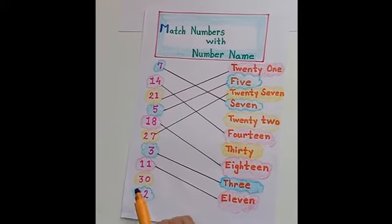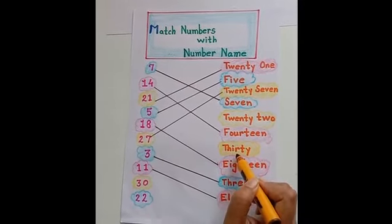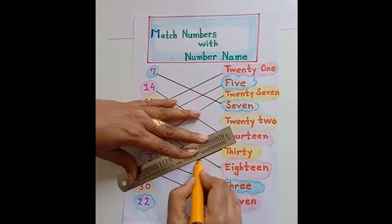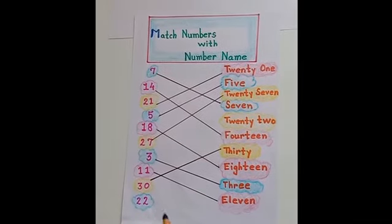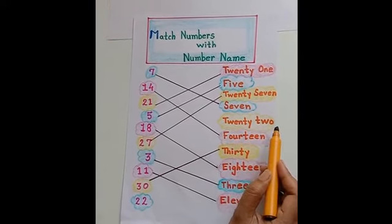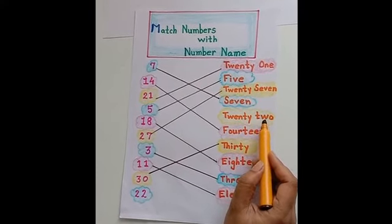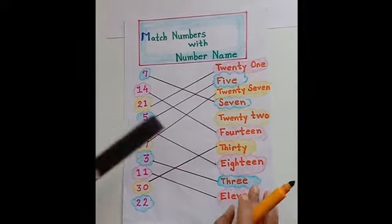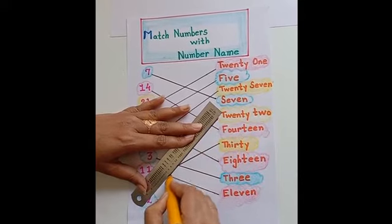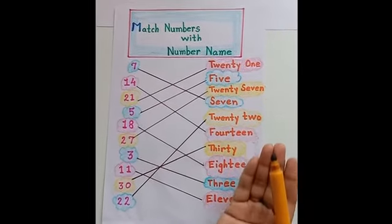Now next number is 30. Let's find out the number name - T-H-I-R-T-Y, 30. Now the last number is 22. As you can see, 22 spelling is remaining - T-W-E-N-T-Y, 20, T-W-O, 2. 22. Let's match. Yes! See, children, we have found out all the number names.